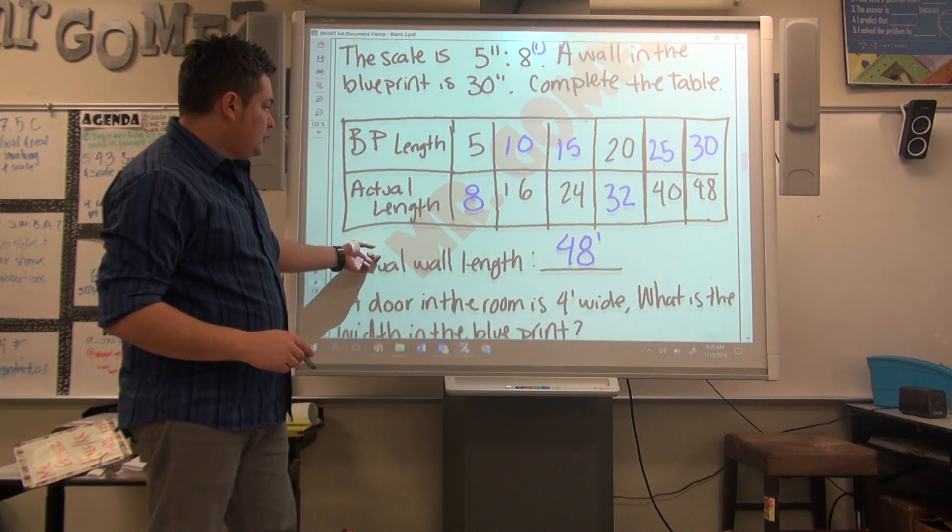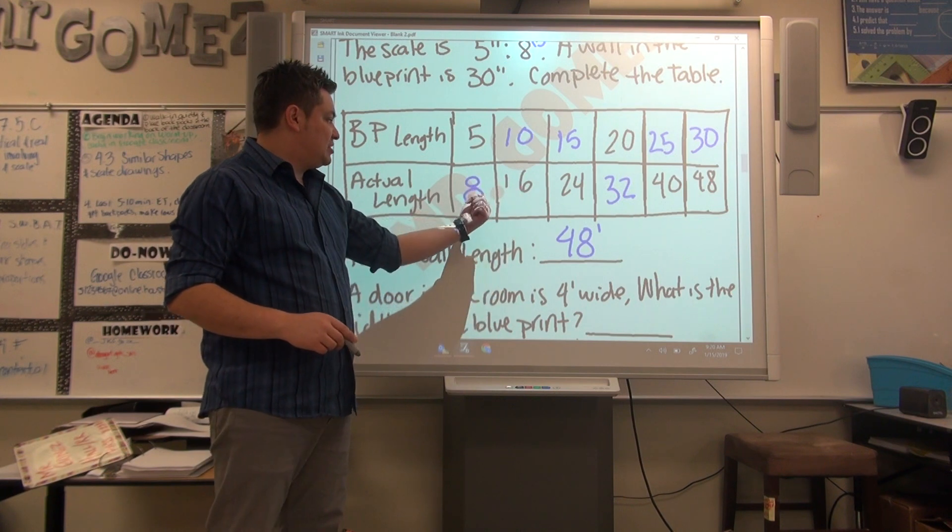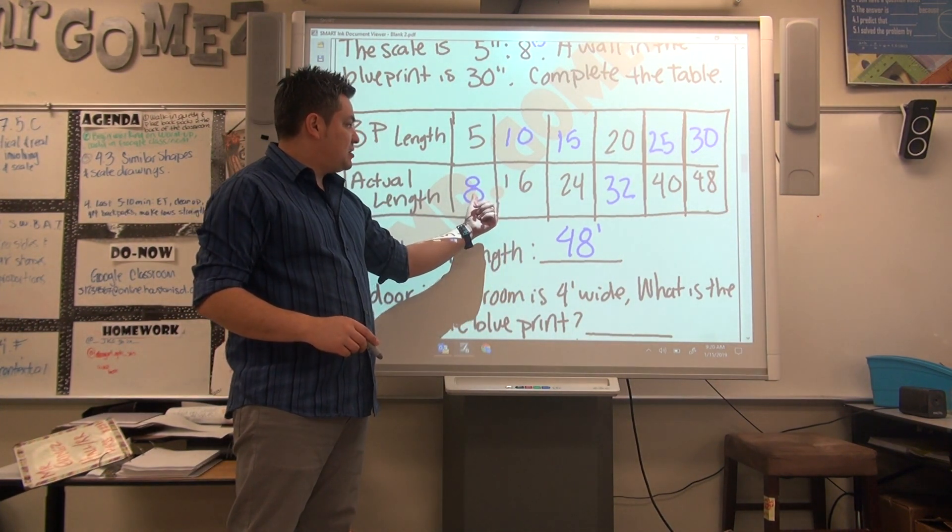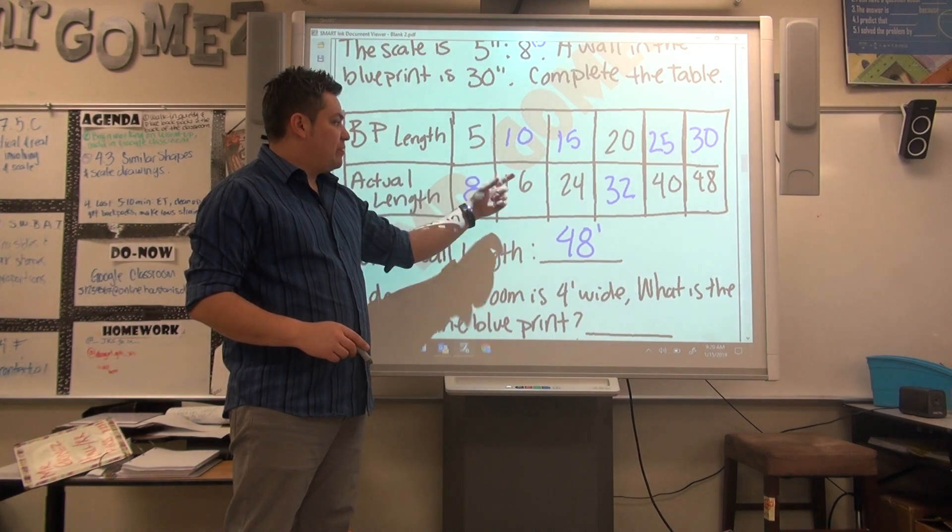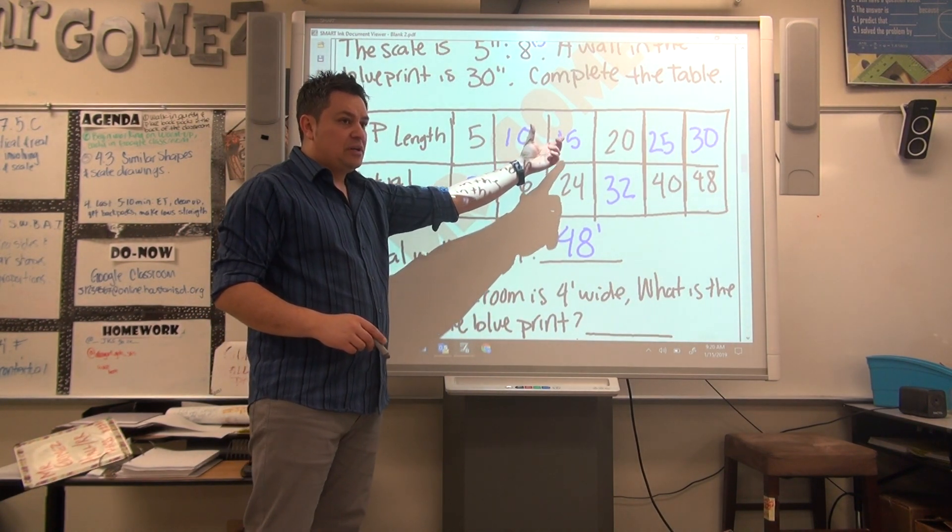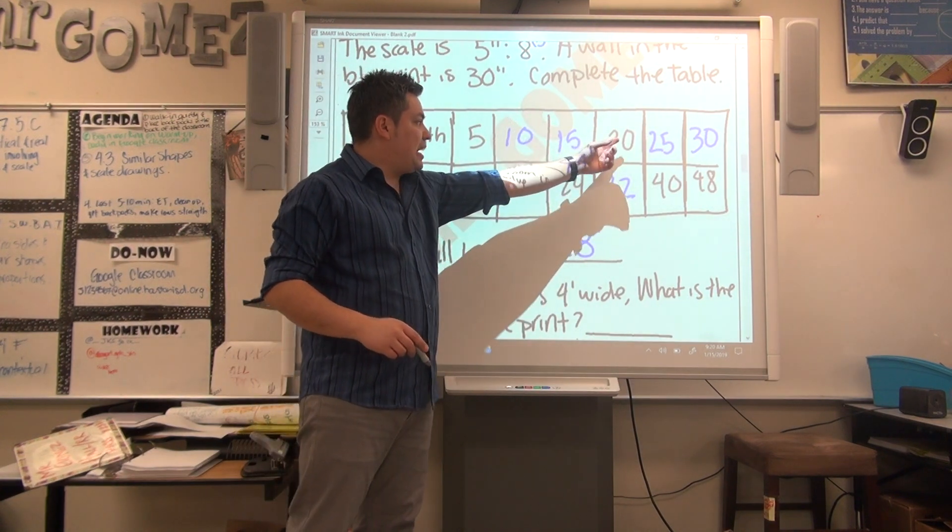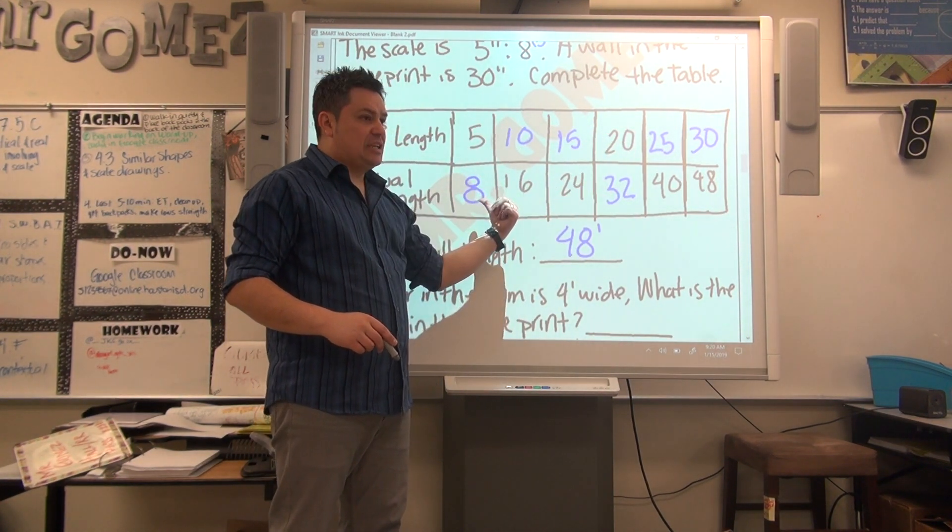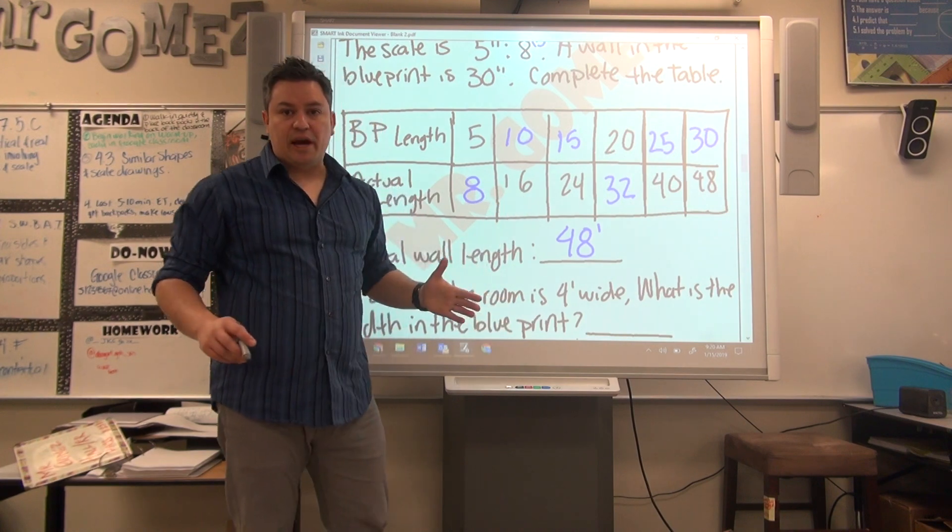Again, you just got to divide by the sets of 8s that you have. Divide 16 by 8 and multiply times 5. Divide 24 by 8, multiply times 5 to get the top. And to get the bottom, divide 20 by 5 and multiply times 8.